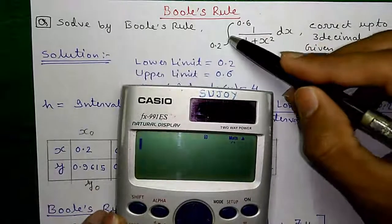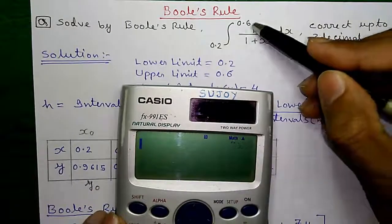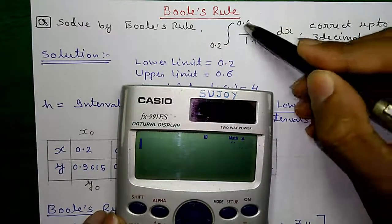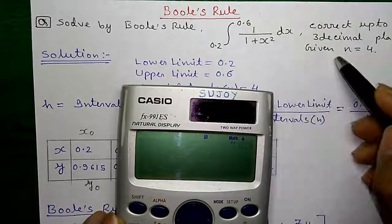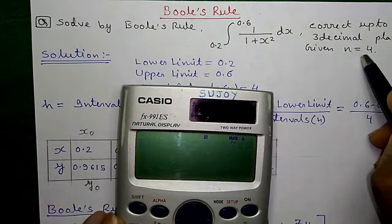So, here is our question: find the integration of 1 divided by 1 plus x squared dx with lower limit of 0.2 and upper limit of 0.6 with n, number of intervals, equals to 4.